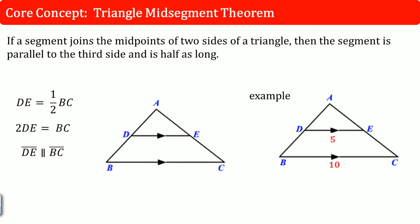So now we can write our core concept. If a segment joins the midpoint, so this is the segment. These are the midpoint. Two sides, the left side and the right side. Then the segment is parallel to the third side and is half as long. So here, this is half as long. So you could see the equation just like this. The base is normal, which is just BC and DE is going to be half as long. So you could write that as one half.